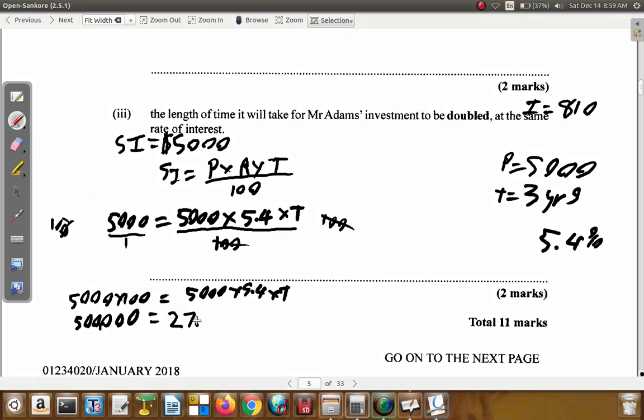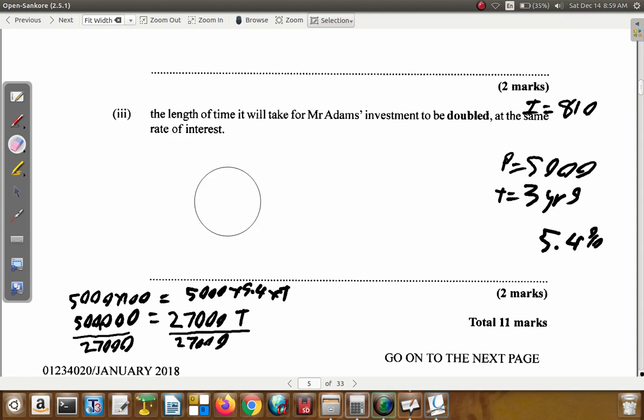You divide by 27,000. You divide both sides by 27,000 because you want T alone on one side. So you get rid of this 27,000 here by dividing by it. So you have T alone. What I have is 500,000 over 27,000 equals T.